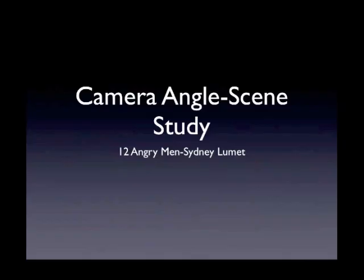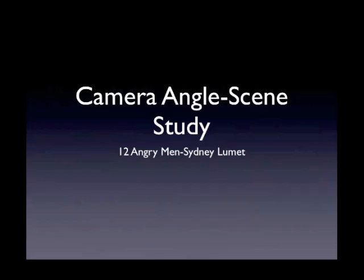This is a camera angle scene study from 12 Angry Men, directed by Sidney Lumet. The film was shot in one room — there's about one minute of film shot outside at the end, but he had a lot of restrictions. To make it interesting, he assembled some of the greatest actors in the world, including Henry Fonda and Lee J. Cobb. He also knew technically he had to do something different, so he started out with a high angle and wide lenses.